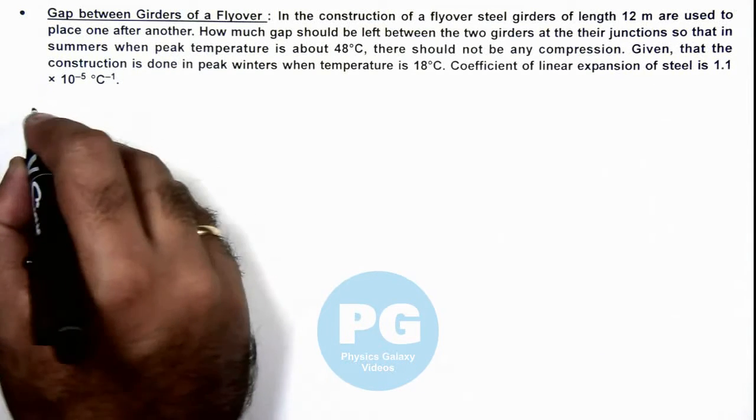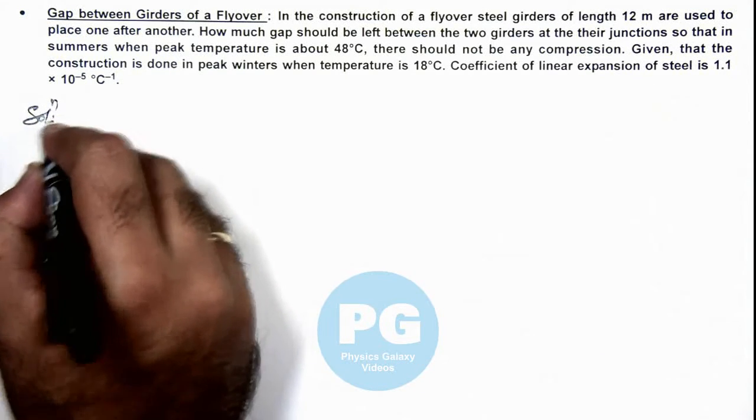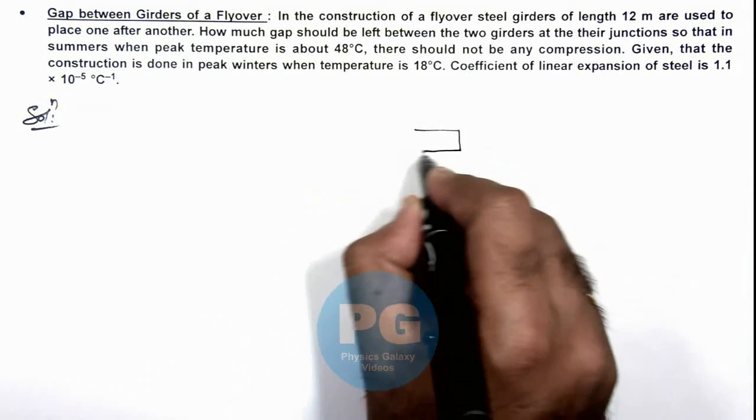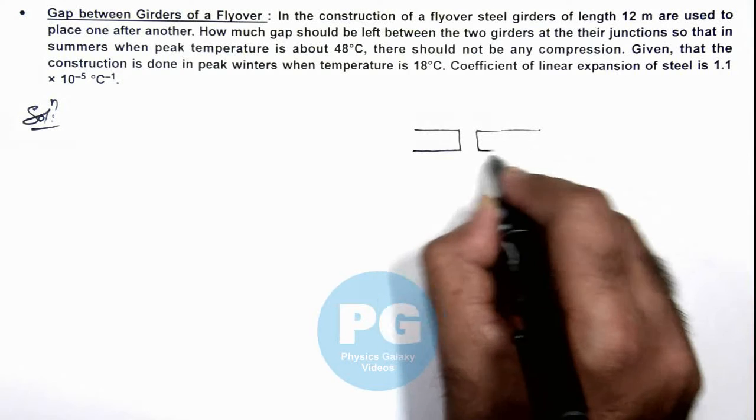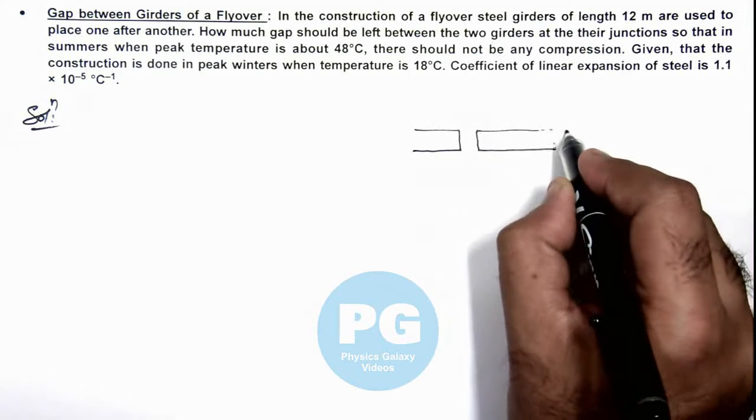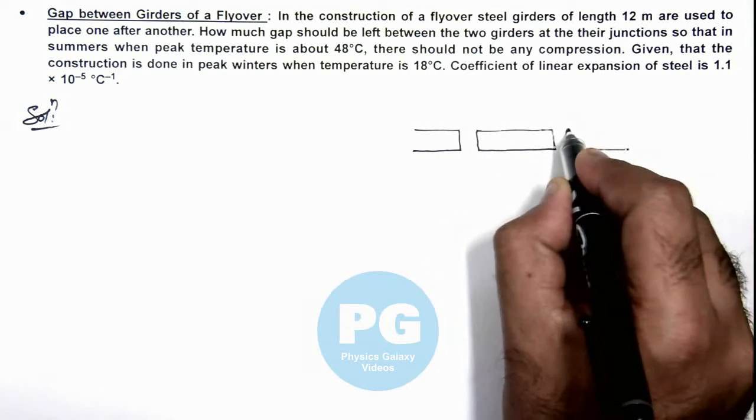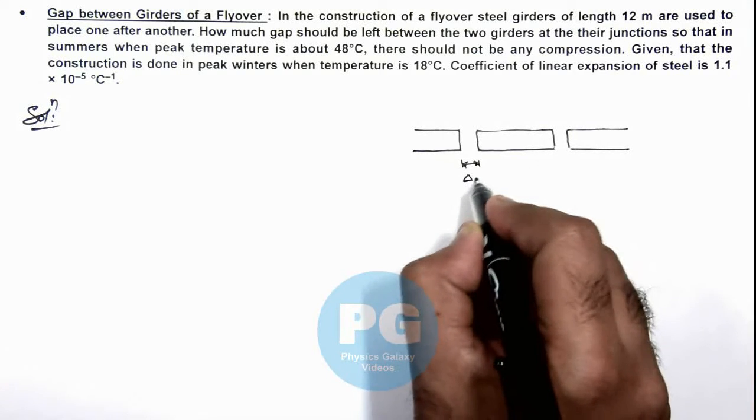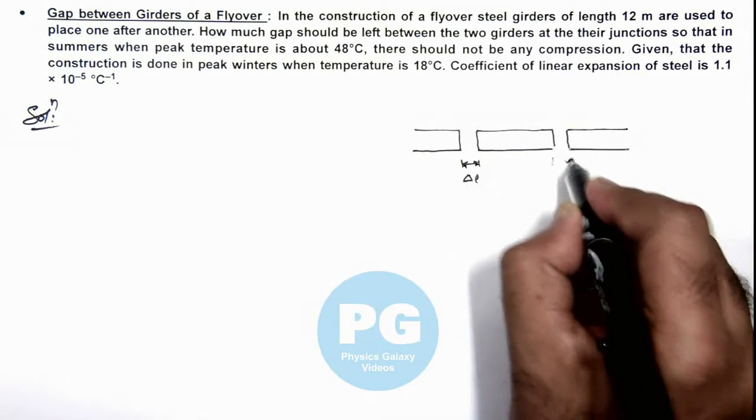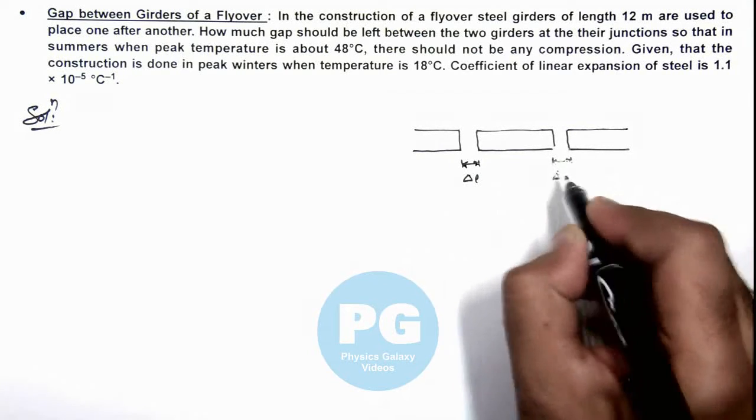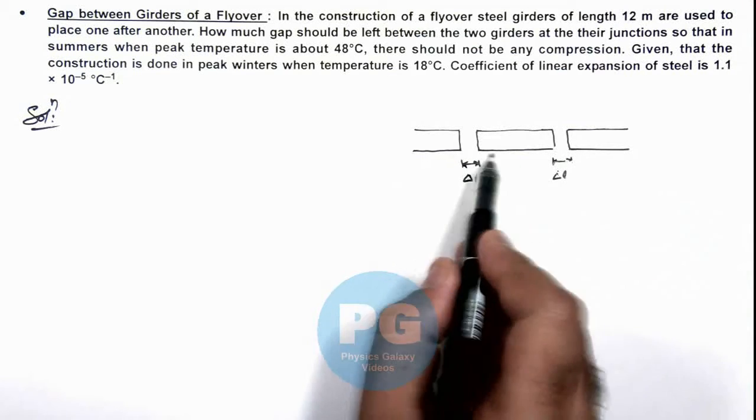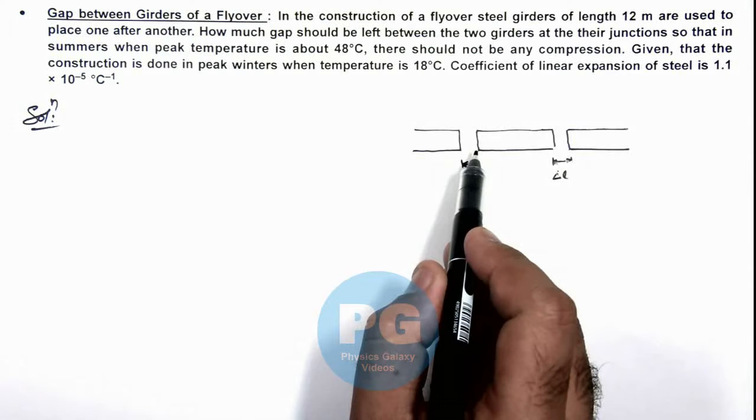So here in solution, we can analyze the situation as: if steel girders are placed in such a way that we place these by keeping a gap between two girders delta L, so that when it'll expand, the girders will not develop any compressive stress on each other.